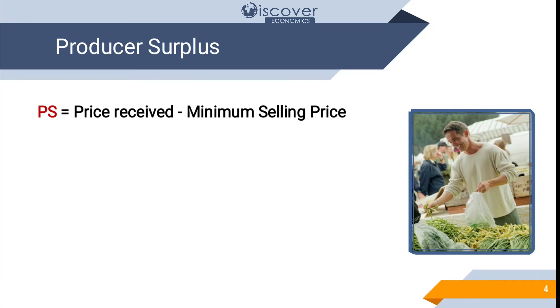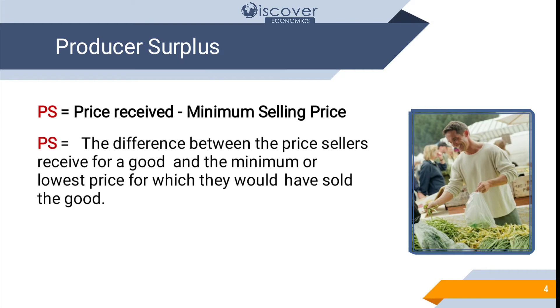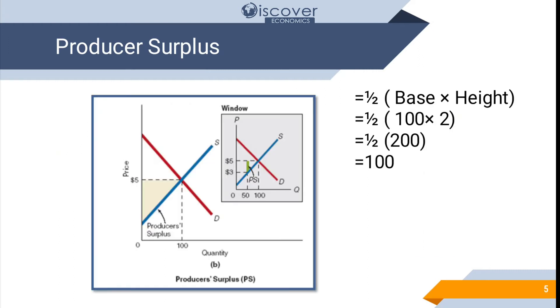Now producer surplus. Whenever a producer wants to sell any product he has an expected price in his mind that I am going to sell at least at this price. But when a buyer comes to the shop he is able to sell on a higher price than what he had in his mind. So the difference between price received and minimum selling price will be the producer surplus. The difference between the price sellers received for a good and the minimum or the lowest price for which they would have sold the good. So this will be the producer surplus.